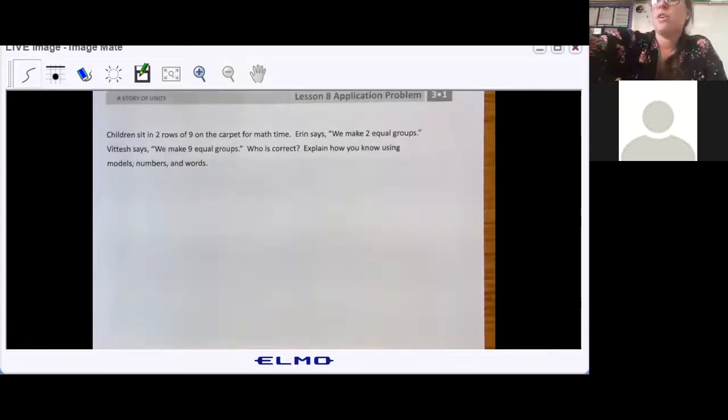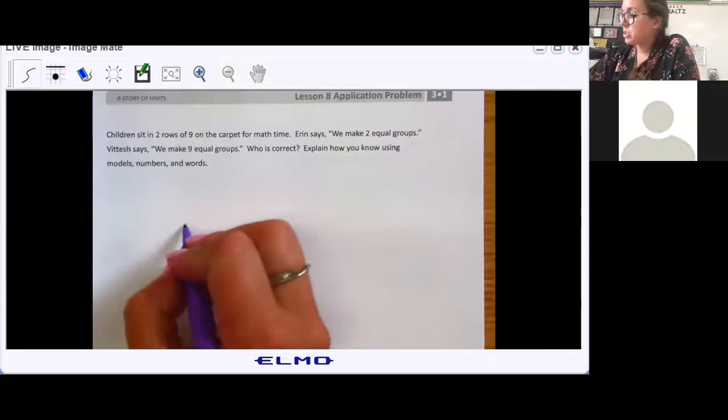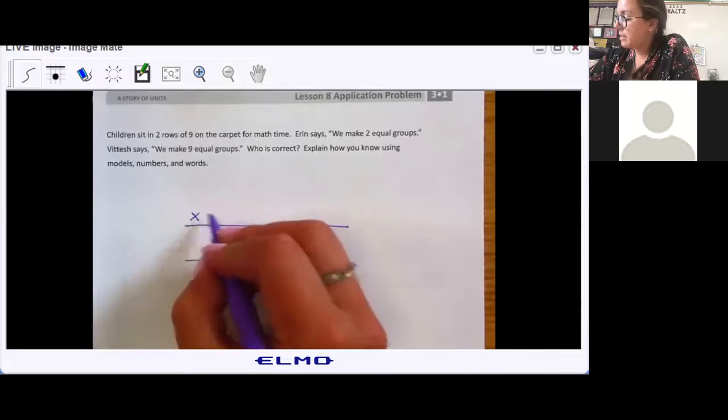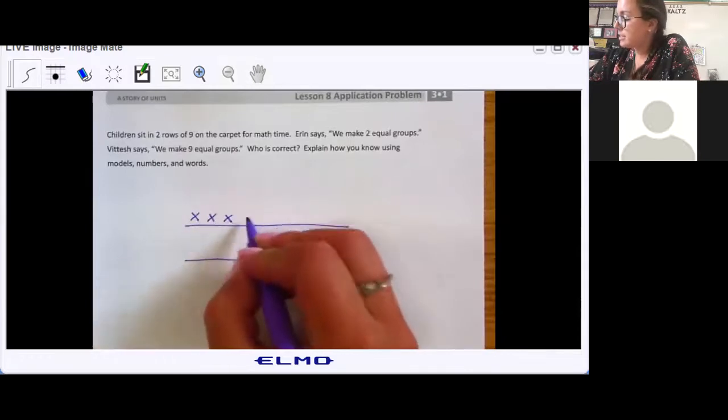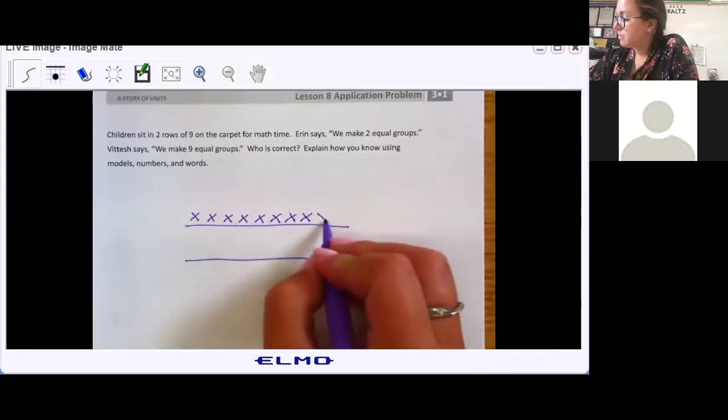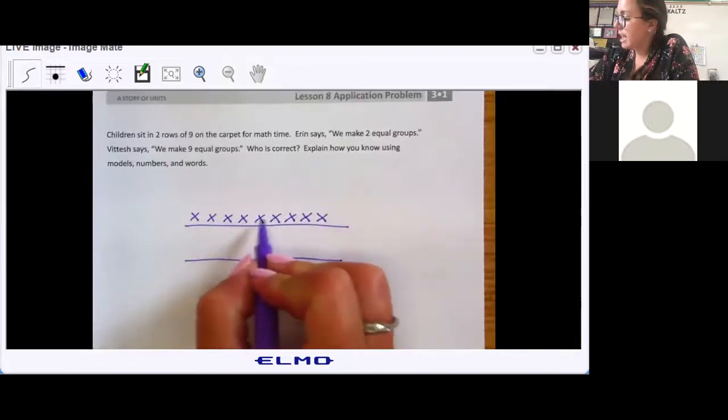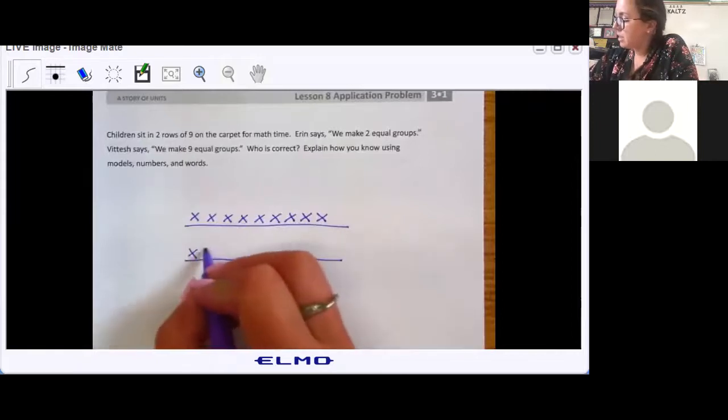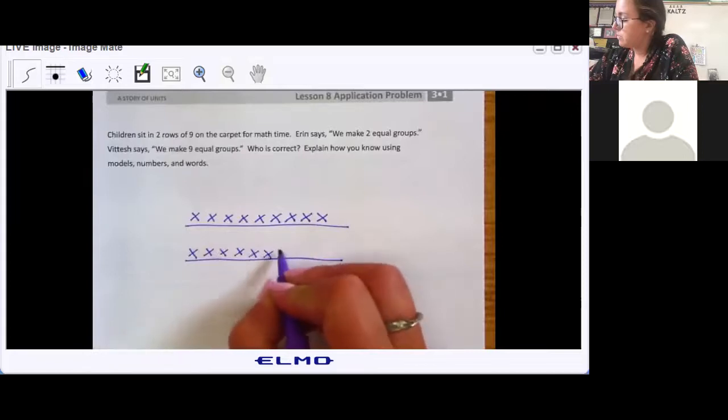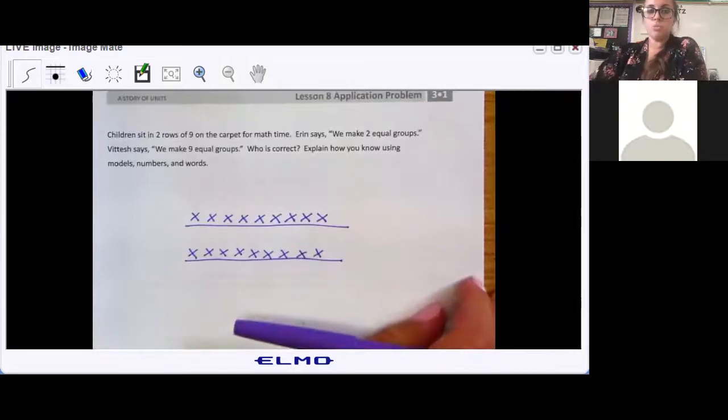All right, now that you've hopefully tried it on your own, let's go over the answer together. So two rows of nine. So we know to draw that this way, two rows of nine. I'm going to do x's. Good, mathematicians count one more time. I'm going to do that for both rows. Okay, so there's my two rows of nine.